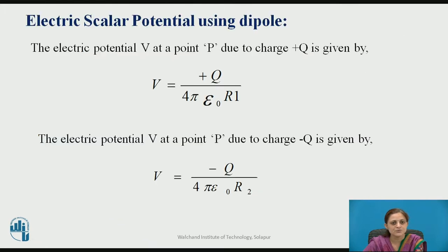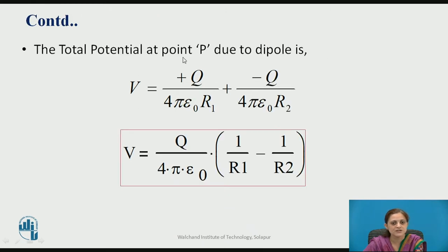The potential at point P due to charge plus Q is given by plus Q upon 4 pi epsilon naught R1. The potential at point P due to minus Q is given by minus Q upon 4 pi epsilon naught R2. Now calculating the total potential by adding these two: V equals plus Q upon 4 pi epsilon naught R1 minus Q upon 4 pi epsilon naught R2.